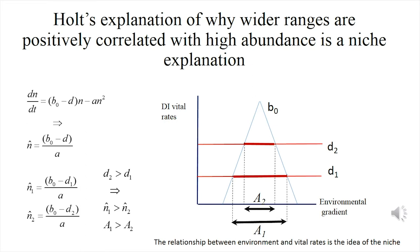He started by assuming logistic equations, which is the first equation to the left. From the logistic equation you can get the population equilibrium size — how many individuals there will be at equilibrium — which is the second equation. N-hat equals the birth rate minus the death rate divided by the density-dependent component of the equation. Now go to the graph. On the x-axis you have some environmental gradient, so if it is wider — like a1 is wider than a2 — that means the distribution is also larger. A1 has a larger geographical expression than a2.